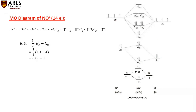Since NO⁺ is positively charged, only 14 electrons are present. One electron comes from nitrogen and one from oxygen, pairing takes place, then pi 2px and pi 2py fill. There are no electrons in the antibonding state and no unpaired electrons, so the molecule exists in a diamagnetic state. The bond order is 3.